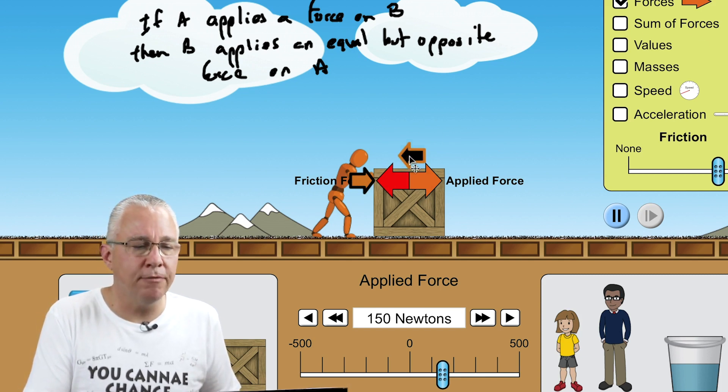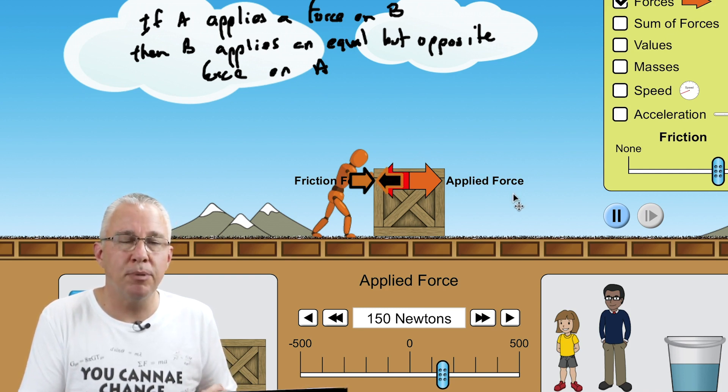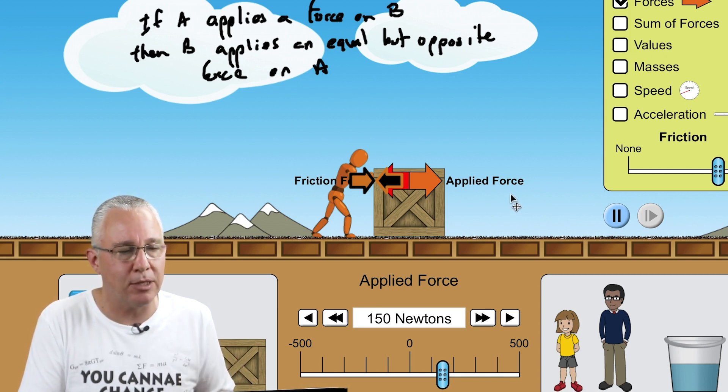Now we also have another force here which is the same size but in the opposite direction, which is the force that the box is applying back onto the man. So you know that if you push something it pushes back on you, and the harder you push the harder you feel that pressure on your hand. It's pushing back on you.